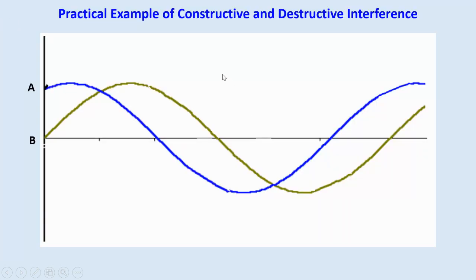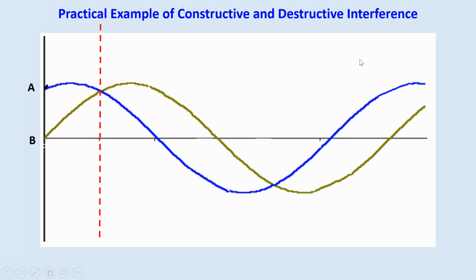So how do we combine constructive and destructive interference in the same wave? Let's do this practical example. We have wave A, the blue one, and wave B, the green one. They are traveling in the same direction and through the same medium. To add the vertical displacement, we draw vertical lines throughout the wave.